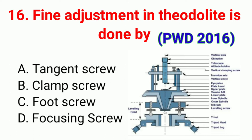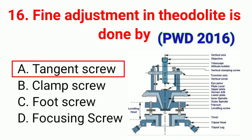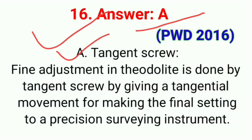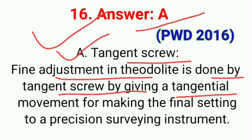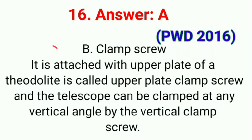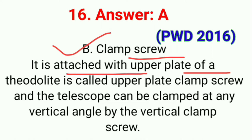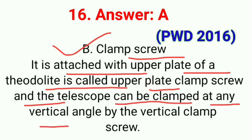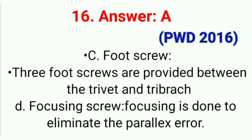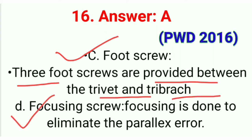Question number sixteen: Fine adjustment in a theodolite is done by. The correct answer is option A, tangent screw. Fine adjustment in a theodolite is done by tangent screw, giving a tangential movement for making final settings. The clamp screw is attached to the upper plate. The telescope can be clamped at any vertical angle by the vertical clamp screw. Three foot screws are provided between trivet and tribranch. Focusing is done to eliminate parallax errors.